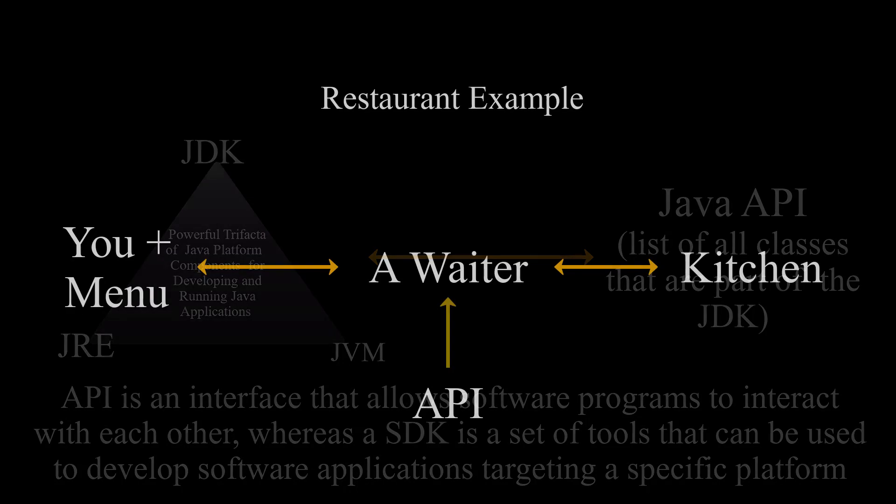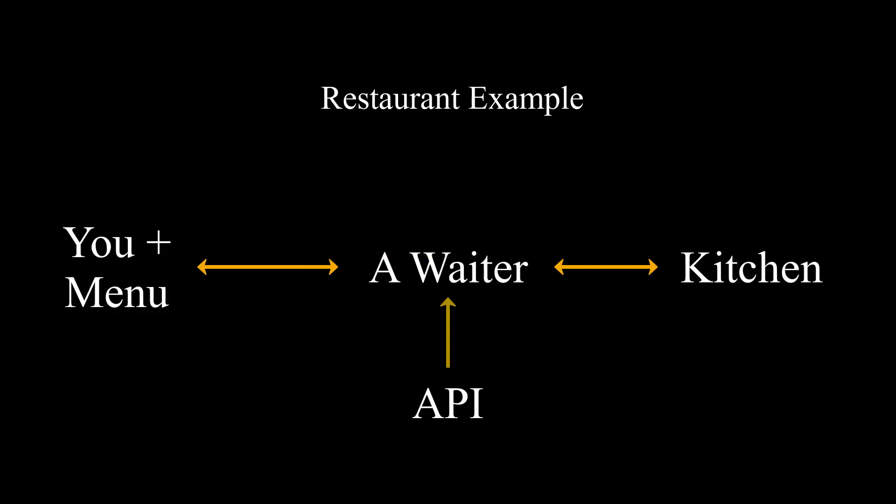Let's think about a restaurant. You use your menu to order food, and the kitchen is preparing the food, but you can't go to the kitchen to get your own food. You need a waiter to communicate your needs to the kitchen and back. And that is the work of API.